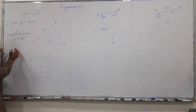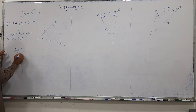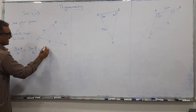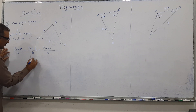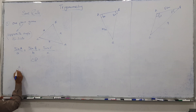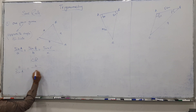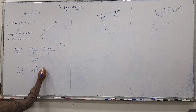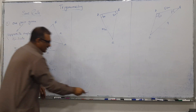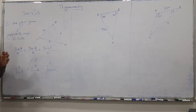The sine rule formula is: sin A divided by small a, equals sin B divided by small b, equals sin C divided by small c. Alternatively, you can flip it: small a over sin A, equals small b over sin B, equals small c over sin C. You can use either form — no issue.